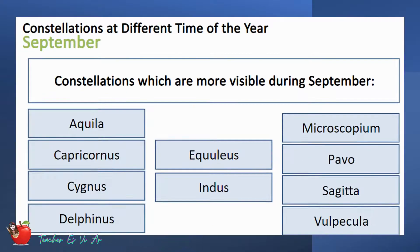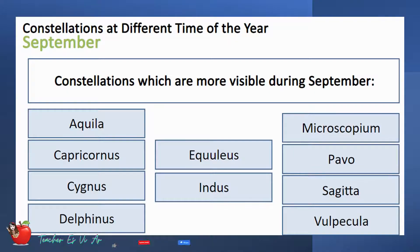These are the constellations more visible during September: Aquila, Microscopium, Capricornus, Equuleus, Pavo, Cygnus, Indus, Sagitta, Delphinus, and Vulpecula.